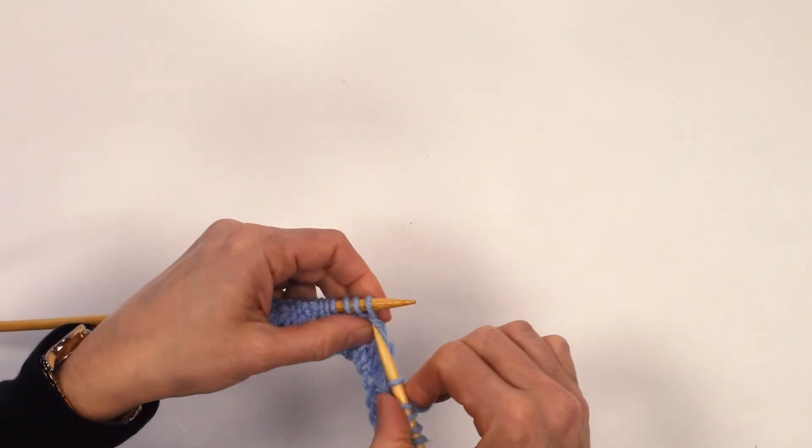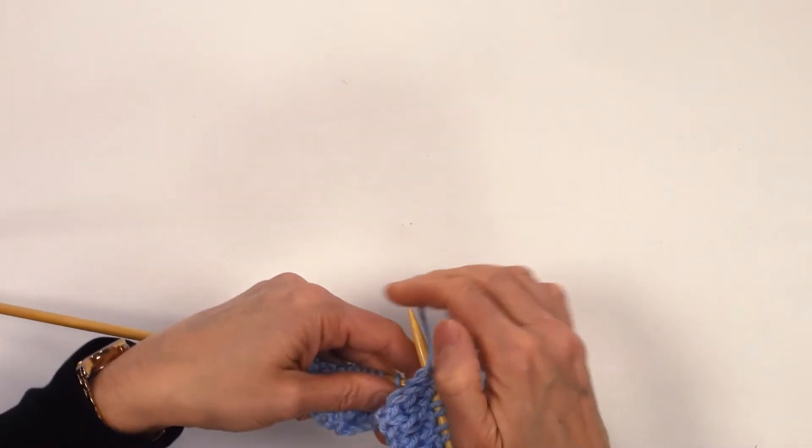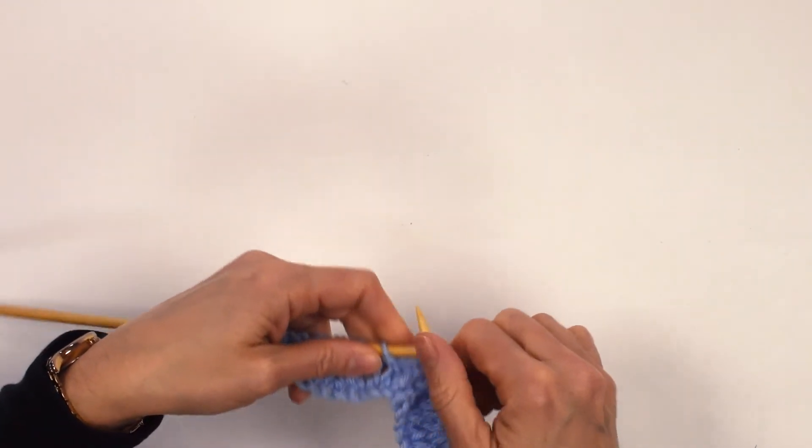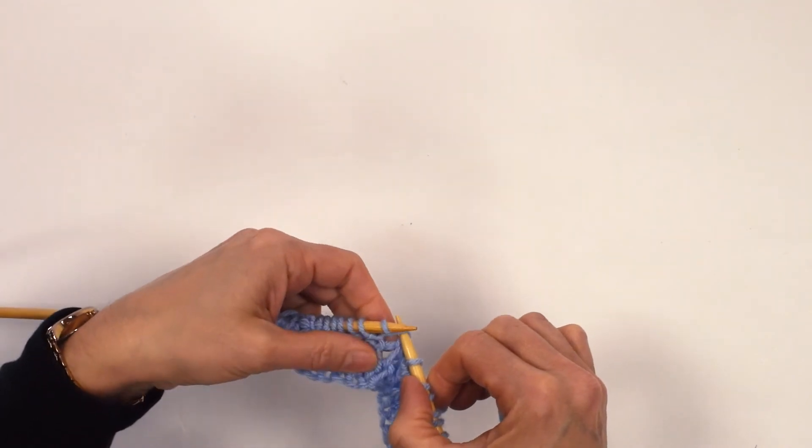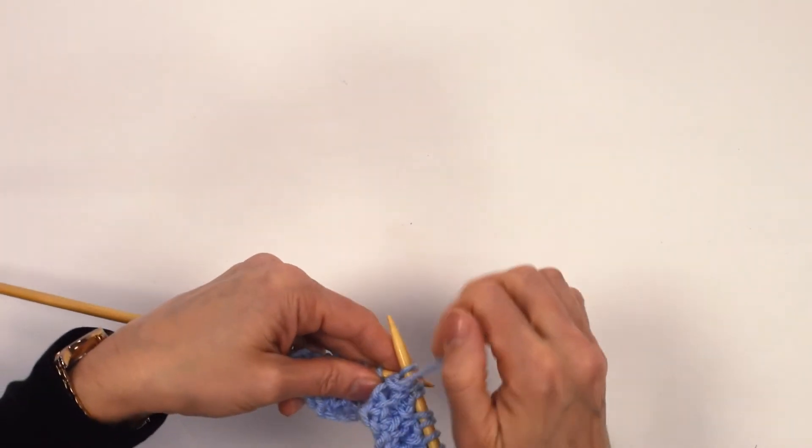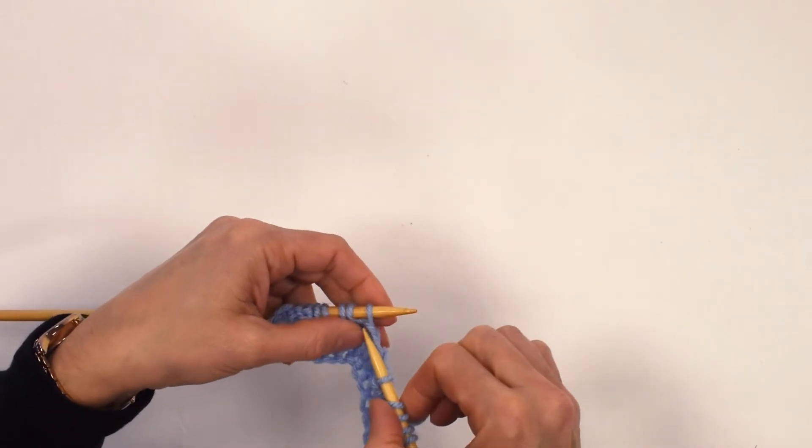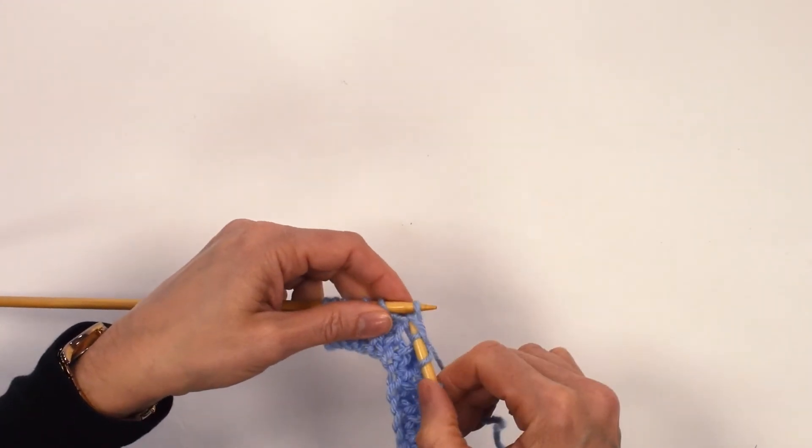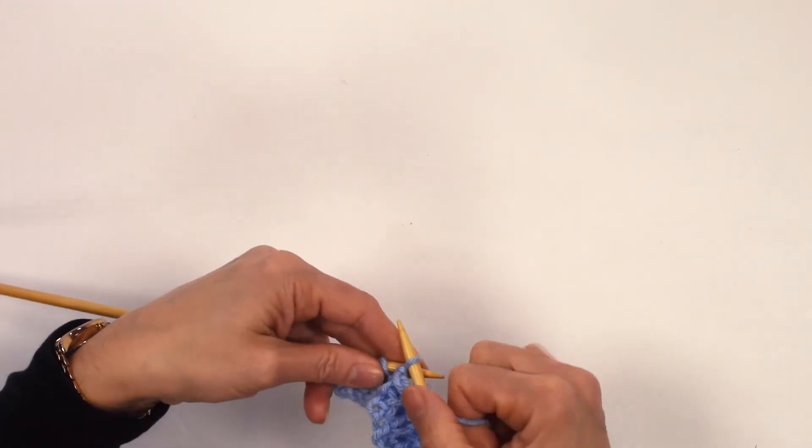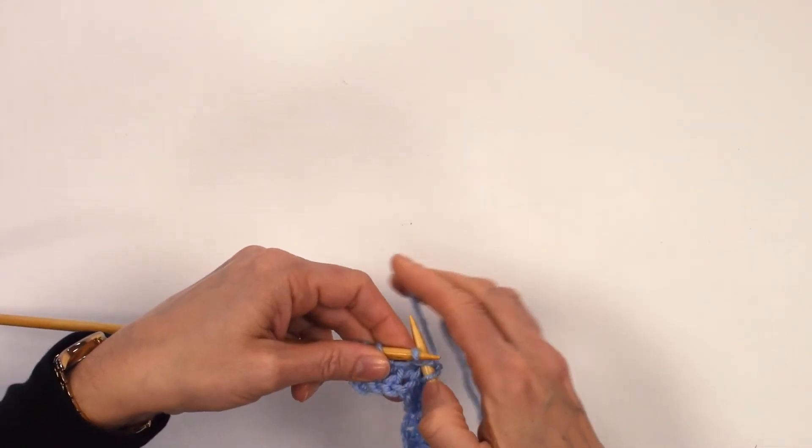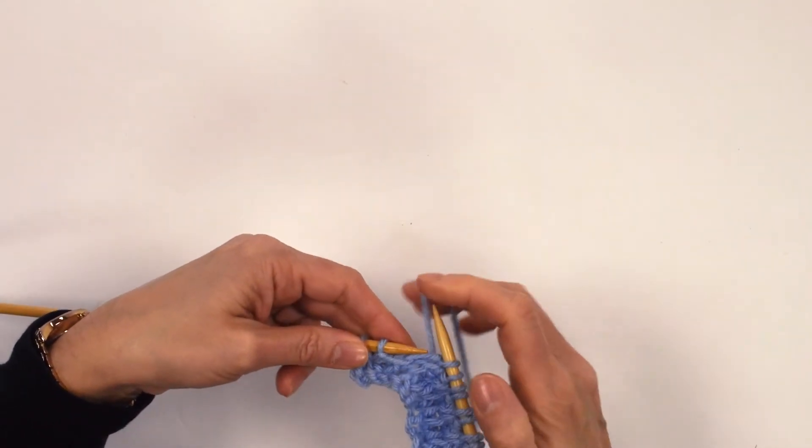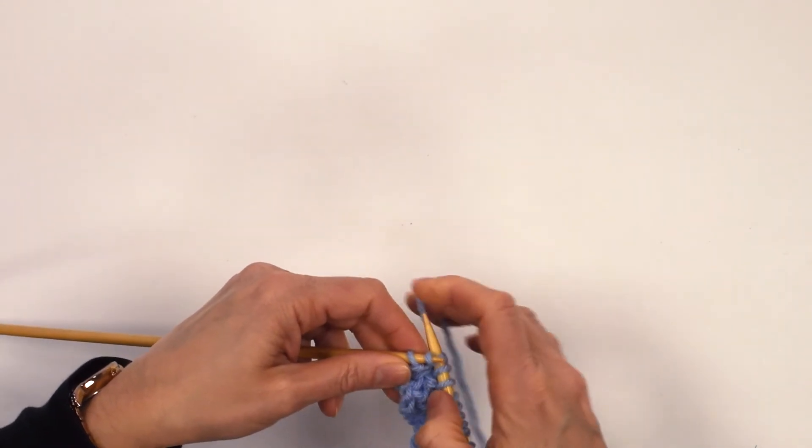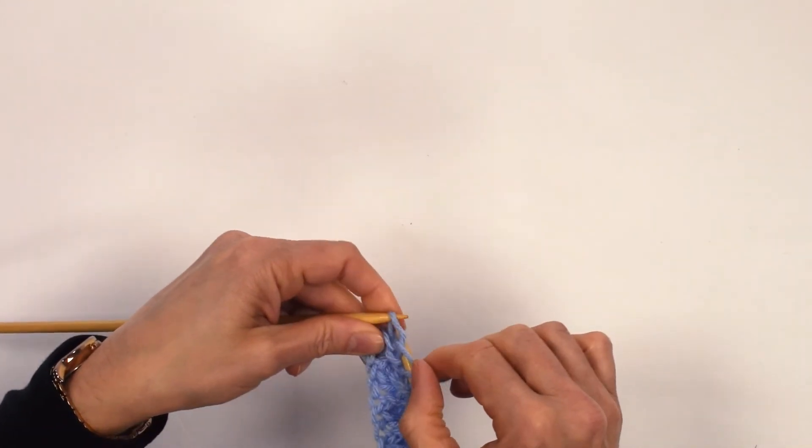Purl one, K1B. Purl one, and work your way across. Purl one, and then the final purl one.